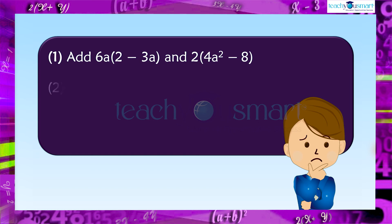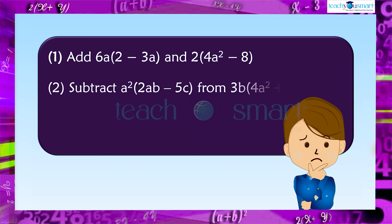Question 2: Subtract a squared multiplied by 2ab minus 5c, from 3b multiplied by 4a squared plus 2c.